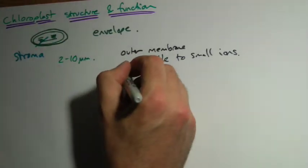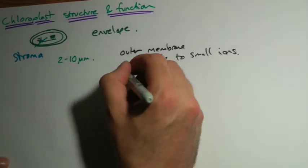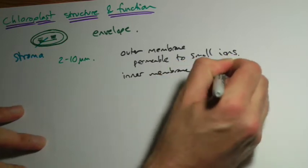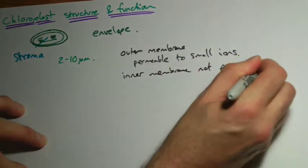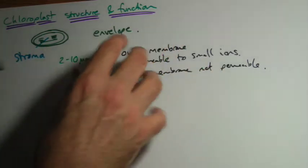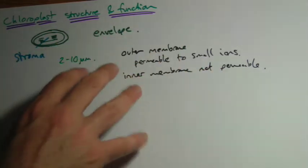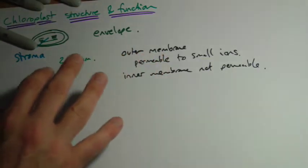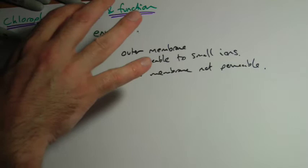The inner membrane is not very permeable. All we're trying to do here is whenever we've got a system where we've got two membranes and one's a bit more permeable than the other, we're basically trying to set something up where we can build up concentration gradients. That's one of the things that we'd expect to see.